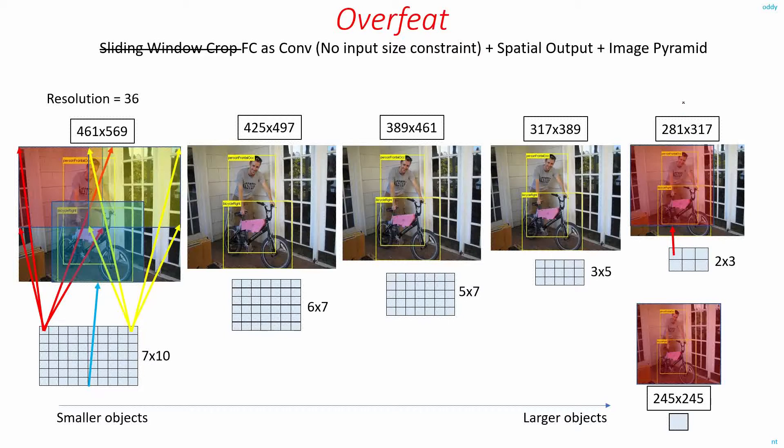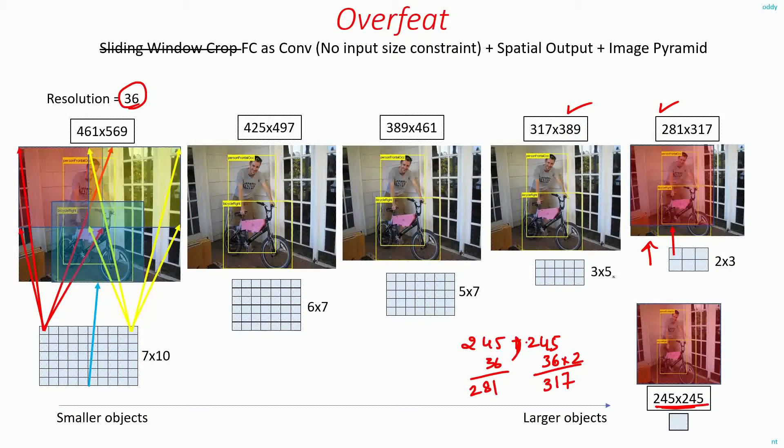When you're coming up with the image dimensions in your image pyramid, you take into account the resolution of your network. For example, this is your base size 245 by 245. If you want to come up with another scale, you just add 36 here. They added 36 times 2, so you get 281, and here you get 317. That's how you get the dimensions of the next scale.